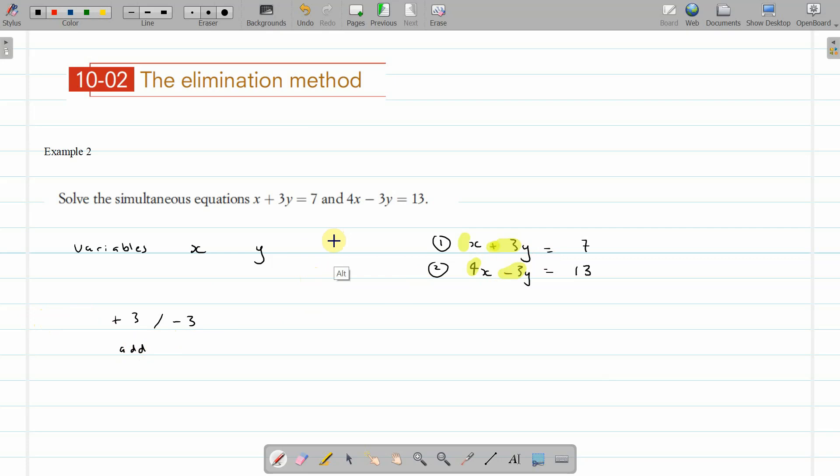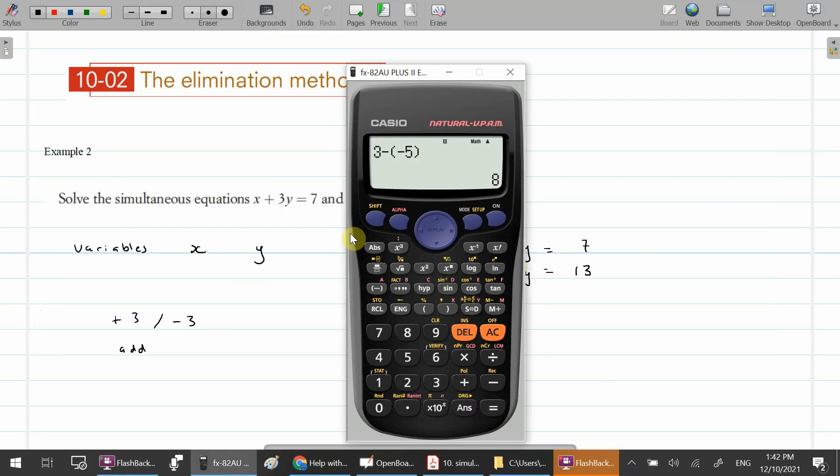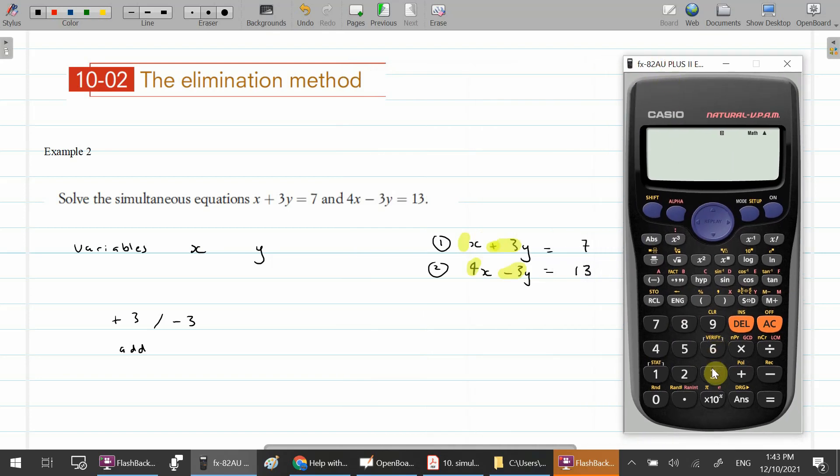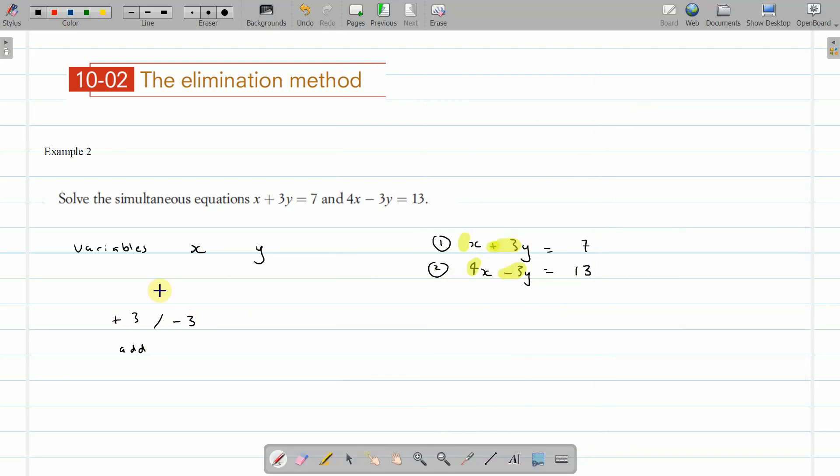Opposite coefficients, we add. Just to show you on a calculator, plus 3, plus minus 3, so I'm just adding 3 and minus 3 together. What do we get? 0, that's what we want. So when the coefficients are opposite, then we must add the two equations together.